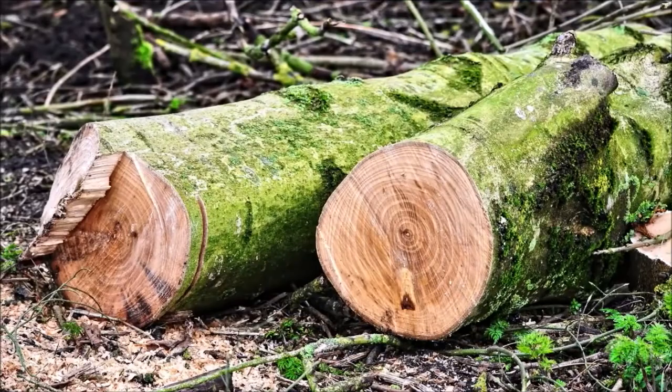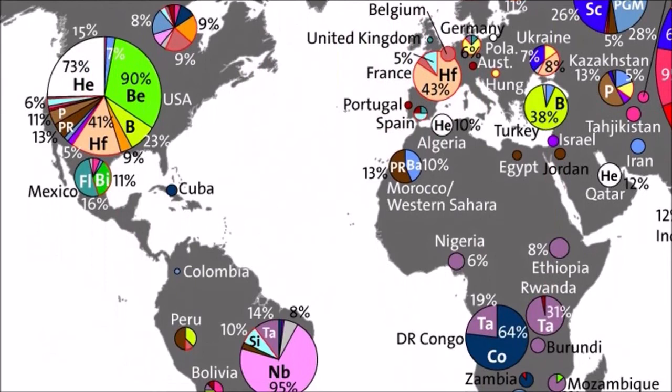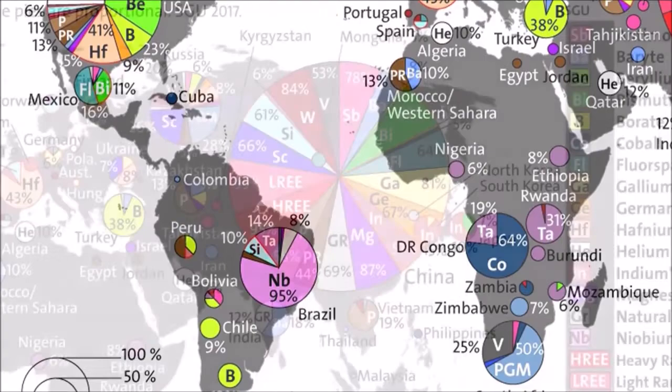The distribution of raw materials across the world is well represented in this map, created by the Geological Survey of Sweden, in which the size of the pie charts is proportional to the production of raw materials in each country, and the figure in each slice indicates the global market share of the country for that specific material. It is immediately clear how the People's Republic of China is the main producer of metals in the world.